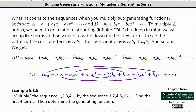And now let's look at a specific example. We're asked to multiply the sequences one, two, three, four, dot dot dot by the sequence one, two, four, eight, 16, dot dot dot, find the first four terms, then determine the generating function. Let's do this on the next slide.